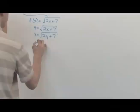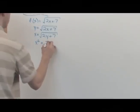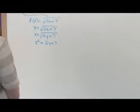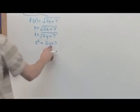So I'm going to have x squared over here is equal to 2y plus 7. I totally got rid of the radical because the opposite of a square root is a square, and I had to square the left side.